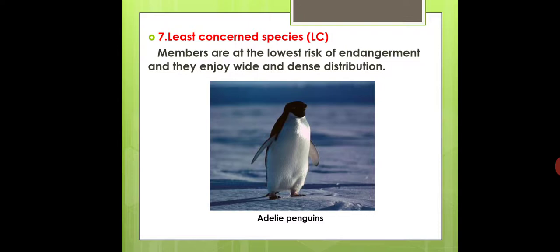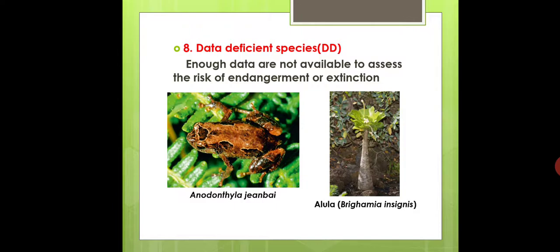The eighth category is Data Deficient Species, abbreviated as DD. Enough data are not available to assess the risk of endangerment or extinction for these organisms.